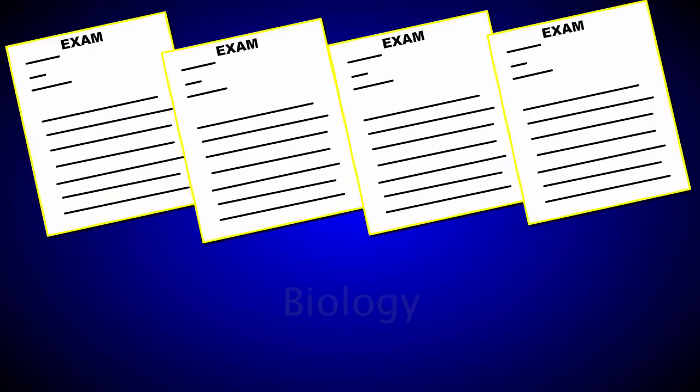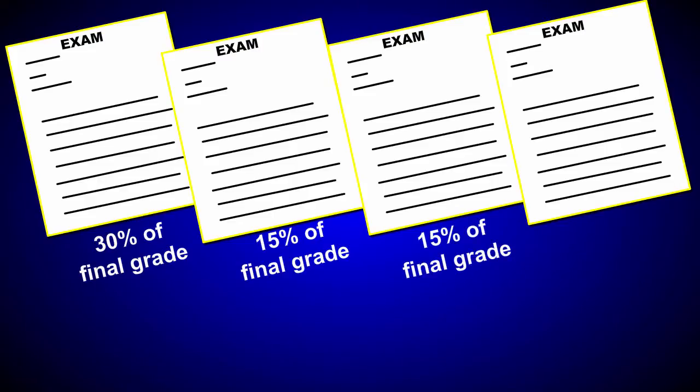The grade for your biology course is based upon four 100-point exams as well. However, the instructor for your biology course weighs each exam differently. The first exam is worth 30% of your grade, the second exam is worth 15%, the third exam is also worth 15%, and the final exam is worth 40%.